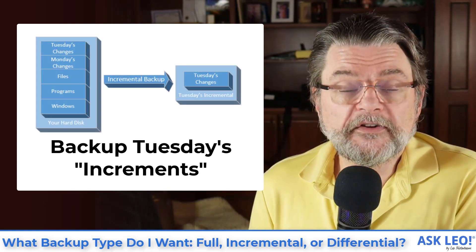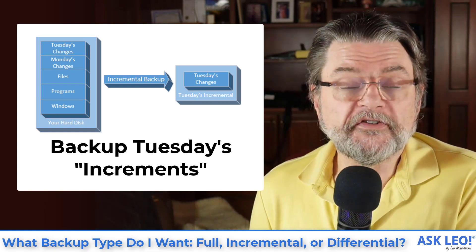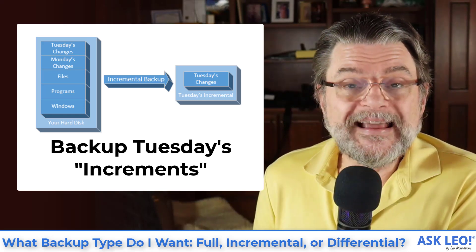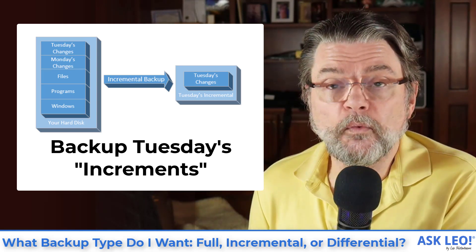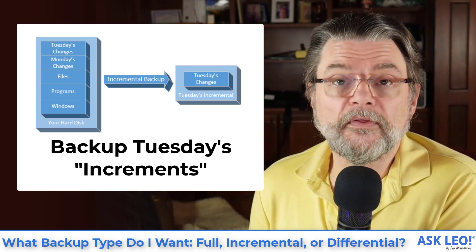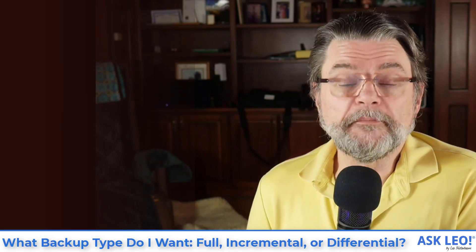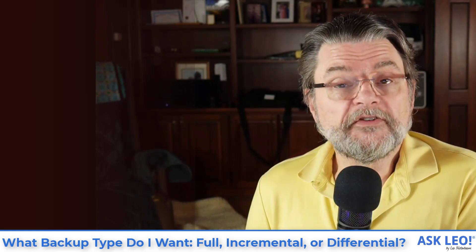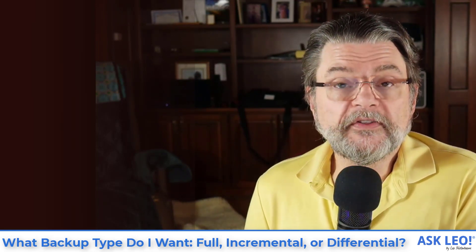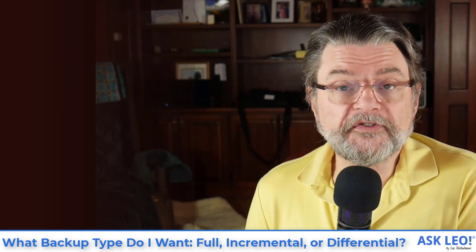On Tuesday we repeat the process — we back up only those files that have changed since the previous backup on Monday, again presumably a much smaller set. On Tuesday we now have a representation of the entire machine as it was on Tuesday using the full backup, the incremental from Monday, and the incremental from Tuesday together. So for an incremental backup the summary is: Sunday is a full backup of everything; Monday includes only those things that changed since Sunday; Tuesday includes only those things that changed since Monday. Together, this collection can be used to restore the machine or recover any file from any given date.